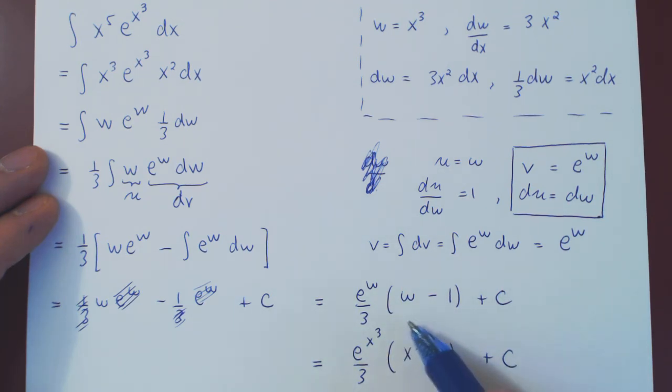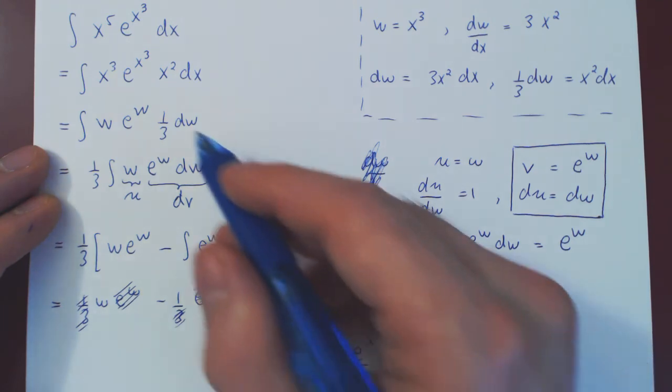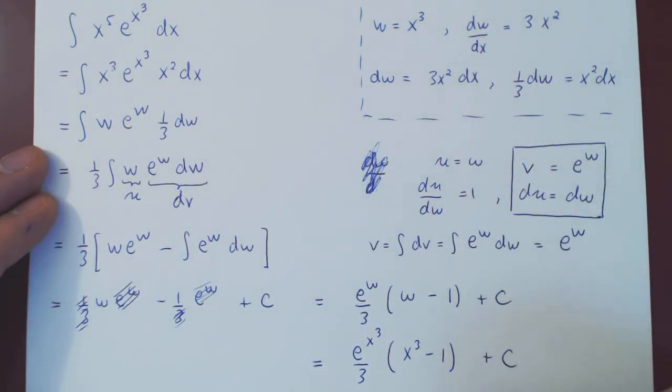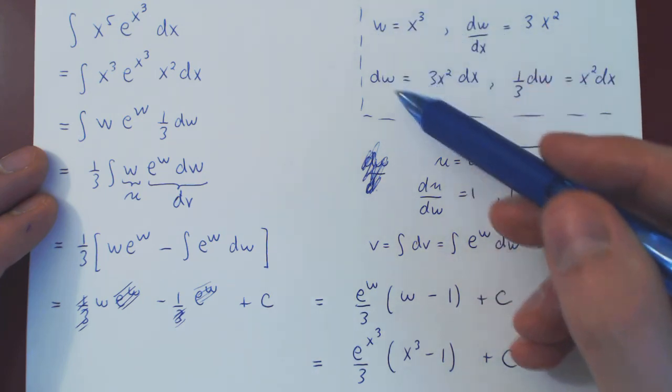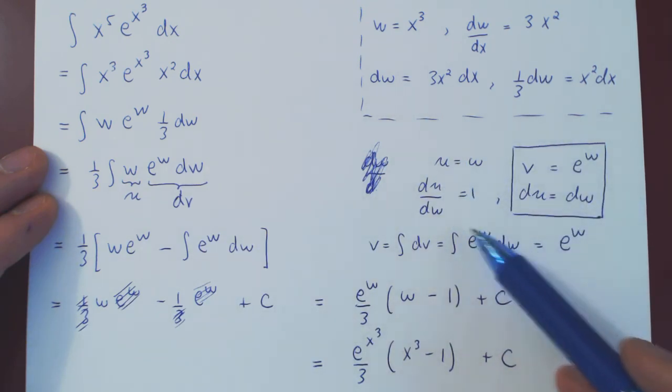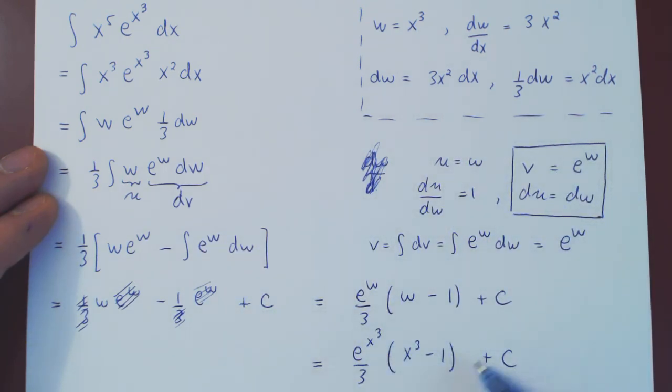As always, you can verify this easily by differentiating this function, and in the end, seeing that you obtain x to the 5 e to the x cubed. What was nice about this problem is we had to first make a substitution, and then we were able to use integration by parts to arrive at a final answer. And that's it.